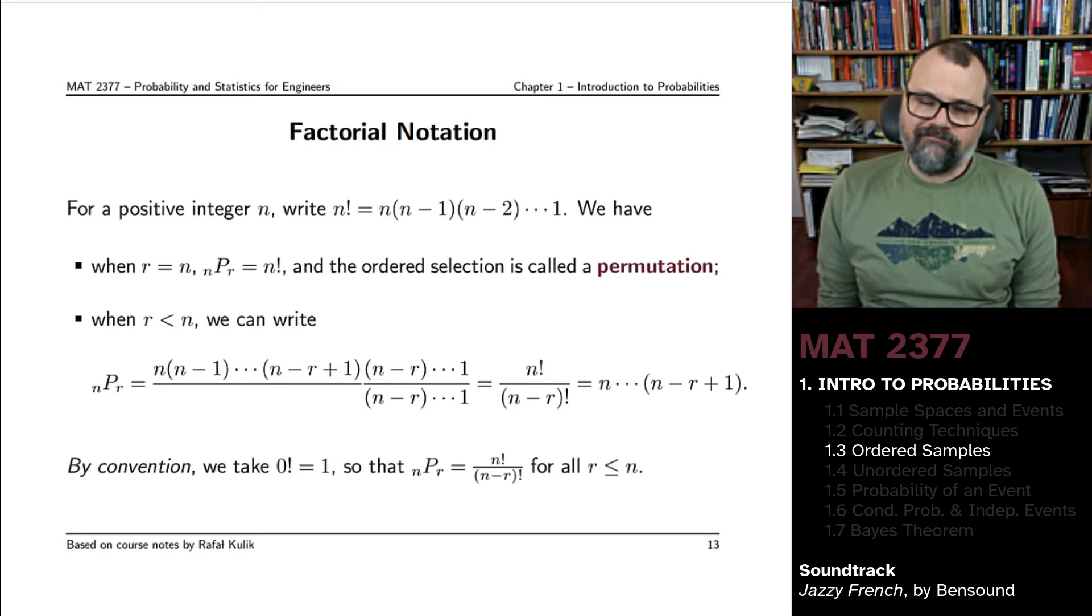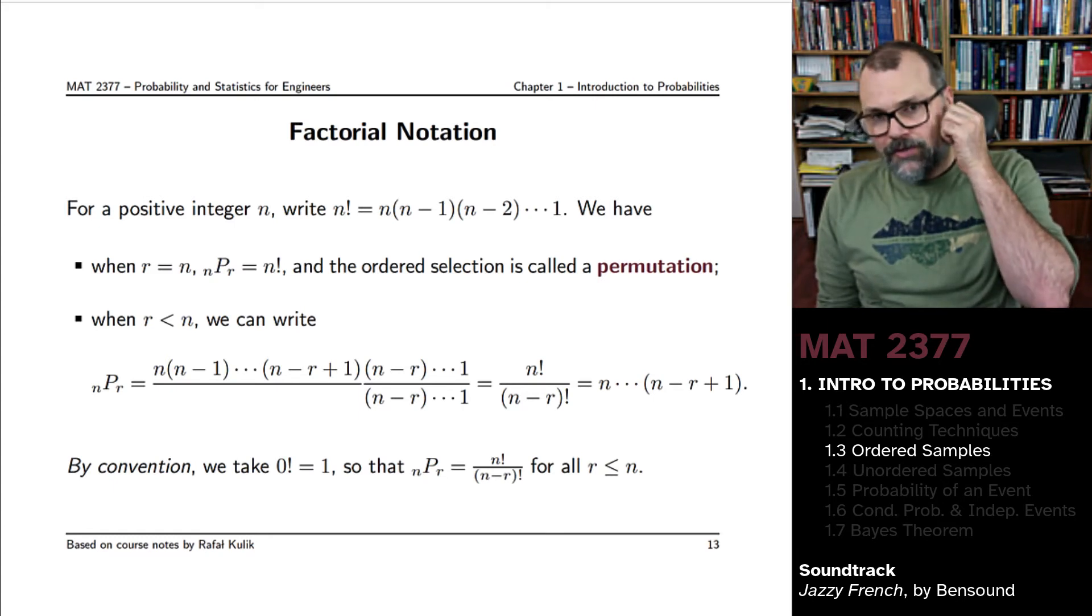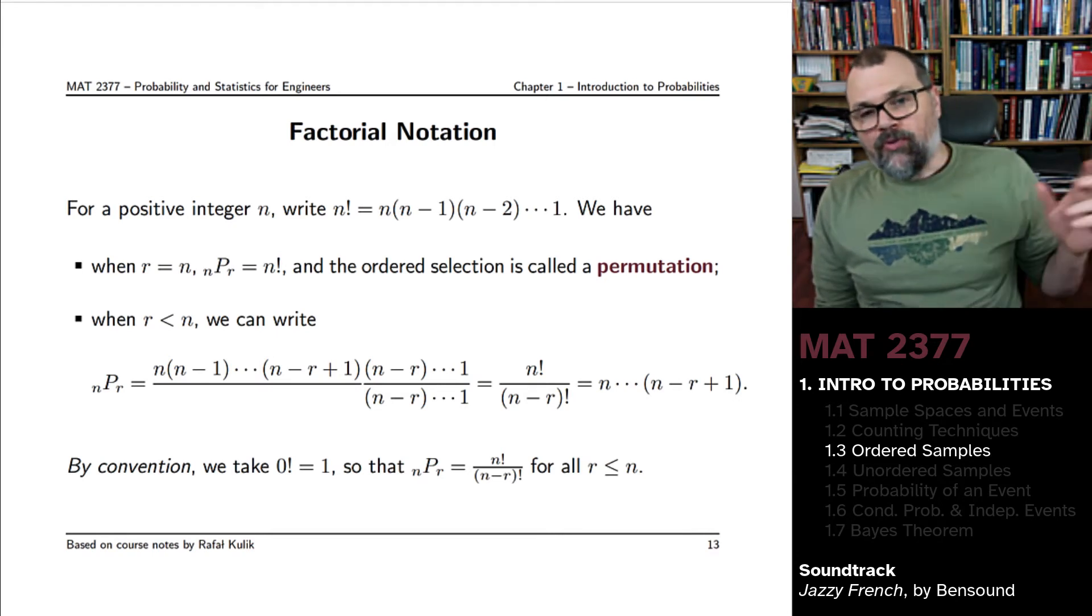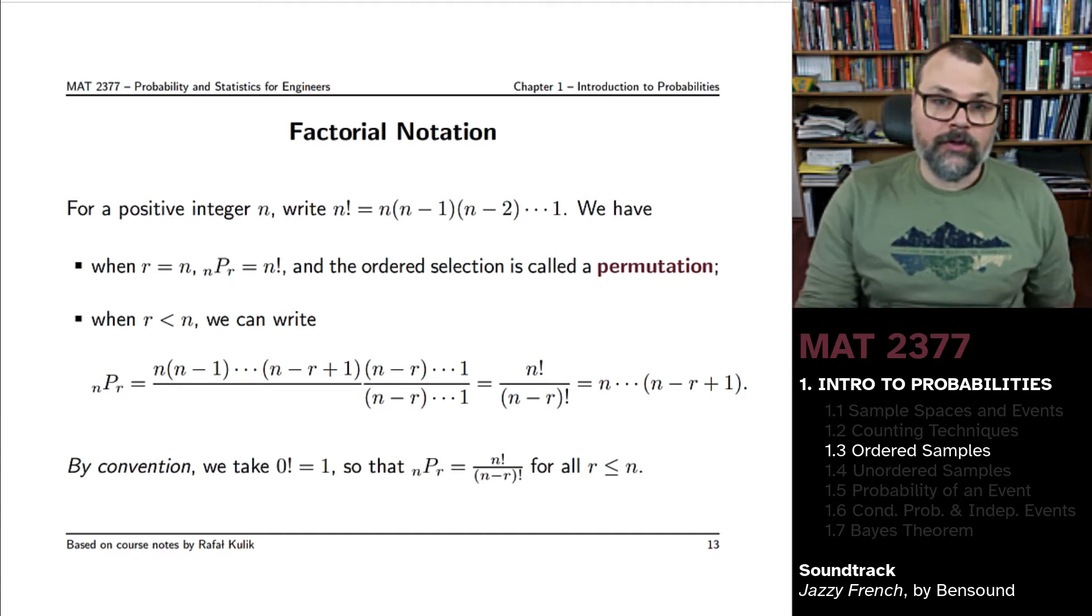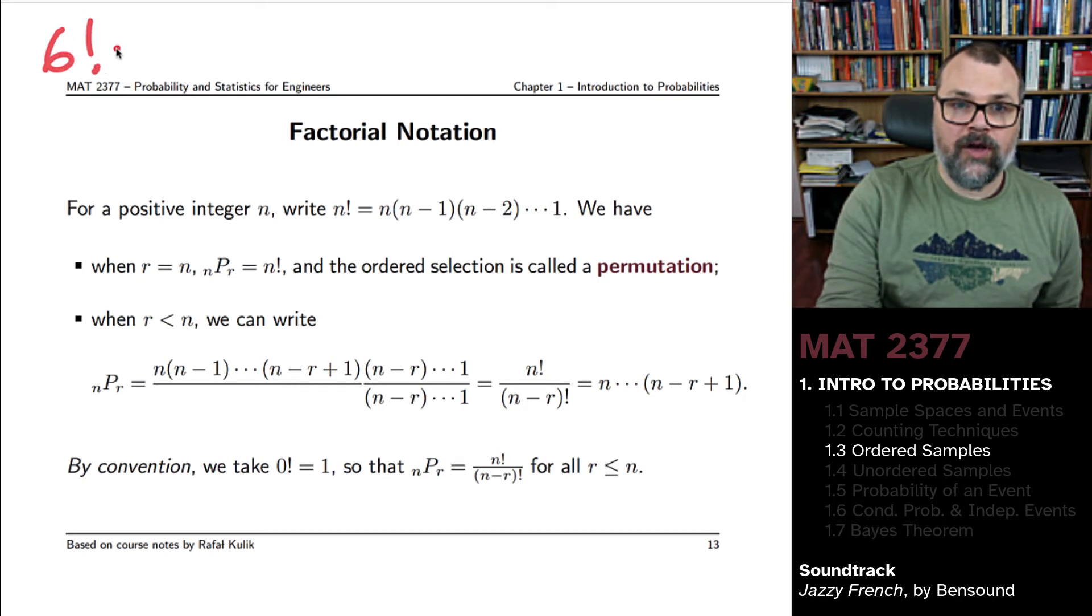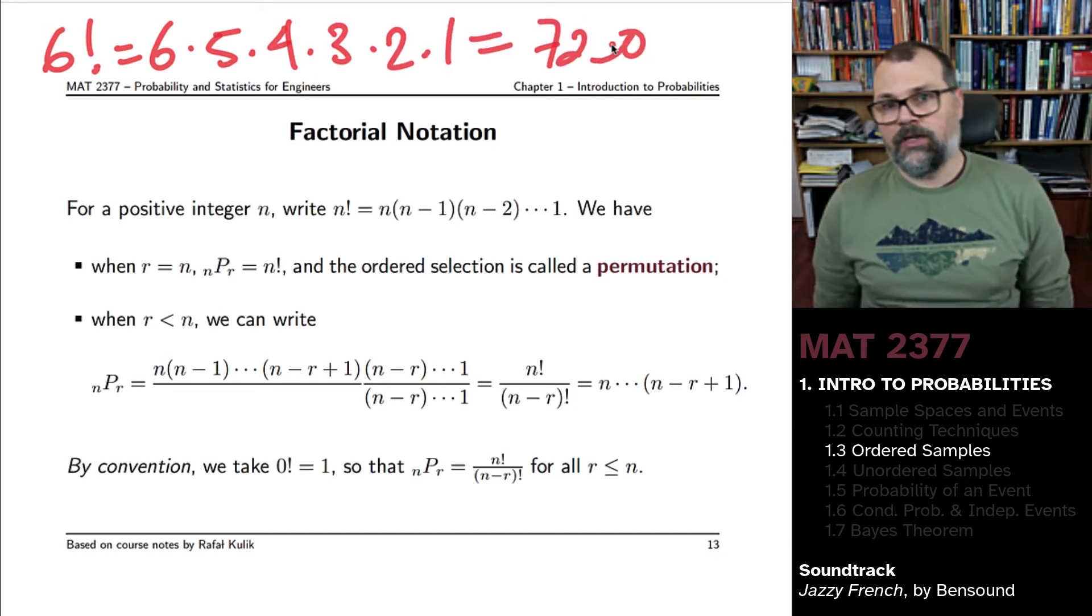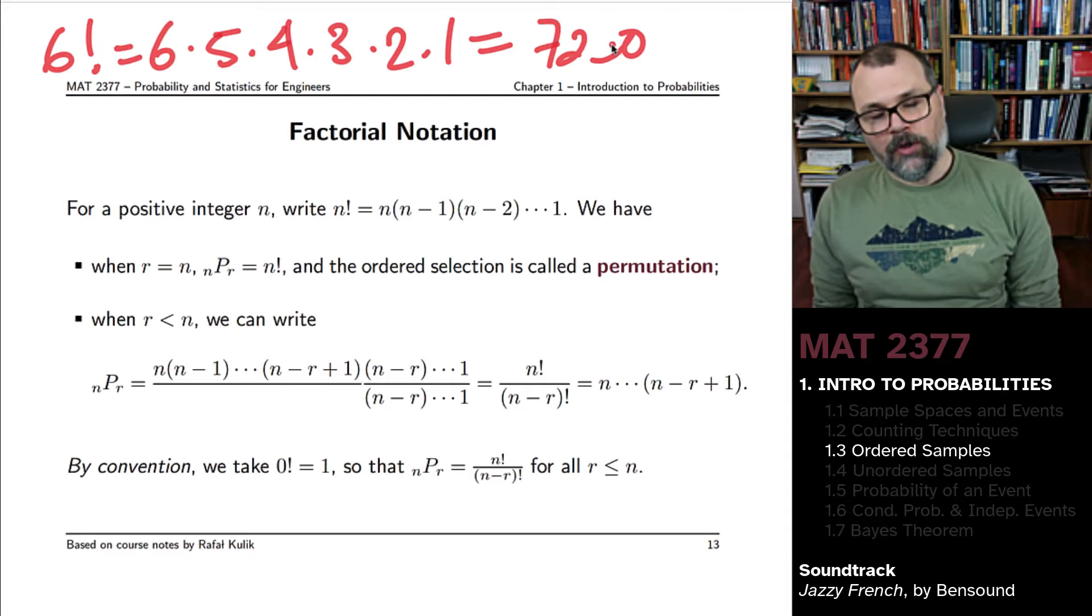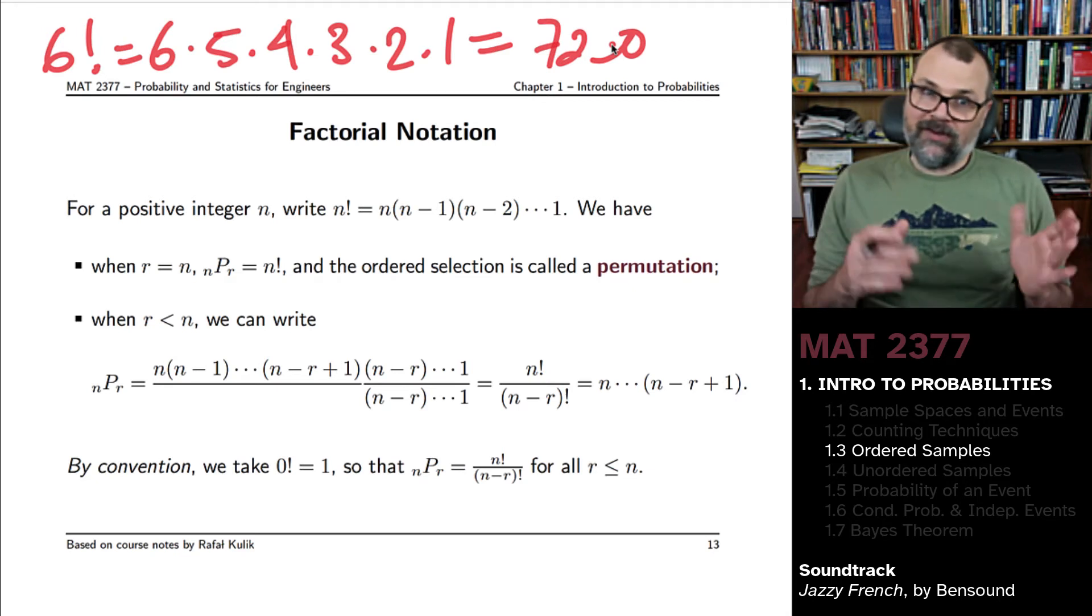There's a notation you can use to make it easier to write all of these products. It's a factorial notation. If your integer is N, N factorial would be the product of all the integers starting from 1 up to N. So 6 factorial would be the product of 6 times 5 times 4 times 3 times 2 times 1, and that's 720. You can compute it directly on your computer, or you could do it by hand as well. 6 times 5, 30, 30 times 4, 120, 120 times 6, 720.